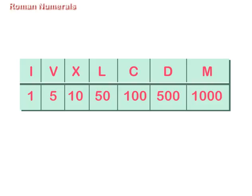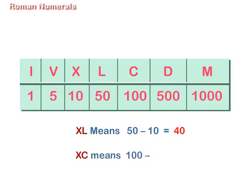X when written to the left of L or C means it is subtracted from that numeral. For example, XL means 50 minus 10 equals 40, and XC means 100 minus 10 equals 90.